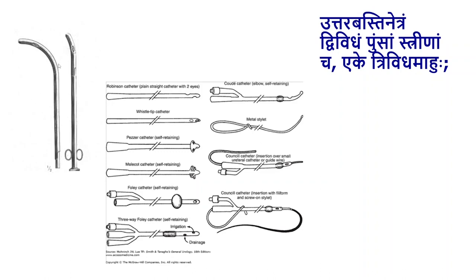These metal catheters are still being used even now, but in the present day we have multiple better options in terms of flexible rubber catheters or catheters with self-retaining qualities, such as Foley's catheter, Malecot's catheter, and Gibson catheter, so there are plenty of options.